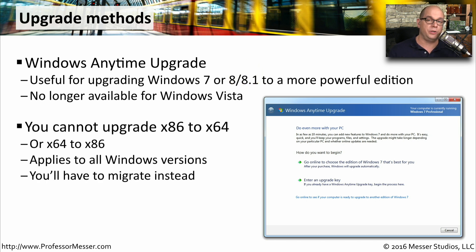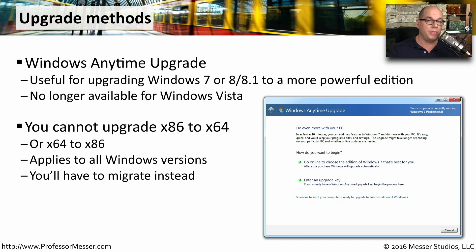Regardless of the method you use to perform an in-place upgrade, one thing consistent across every Windows version is that you cannot upgrade a 32-bit operating system to a 64-bit version, and you can't go the other direction either — you can't take a 64-bit operating system and upgrade to a 32-bit version. If you do have to perform one of these upgrades from 32-bit to 64-bit or vice versa, then you'll need to migrate instead. You'll have to back up your user data, install the new operating system with a clean install, and then migrate your data back into that OS.